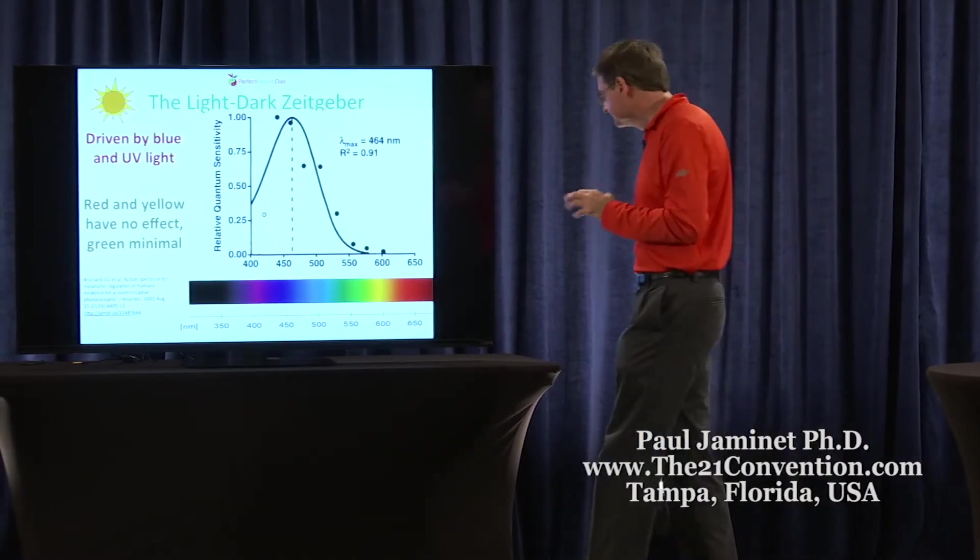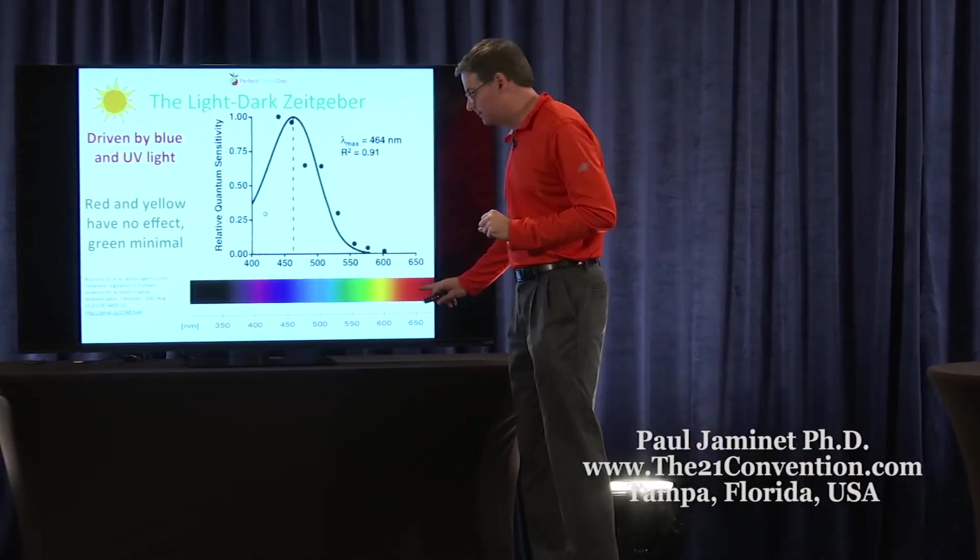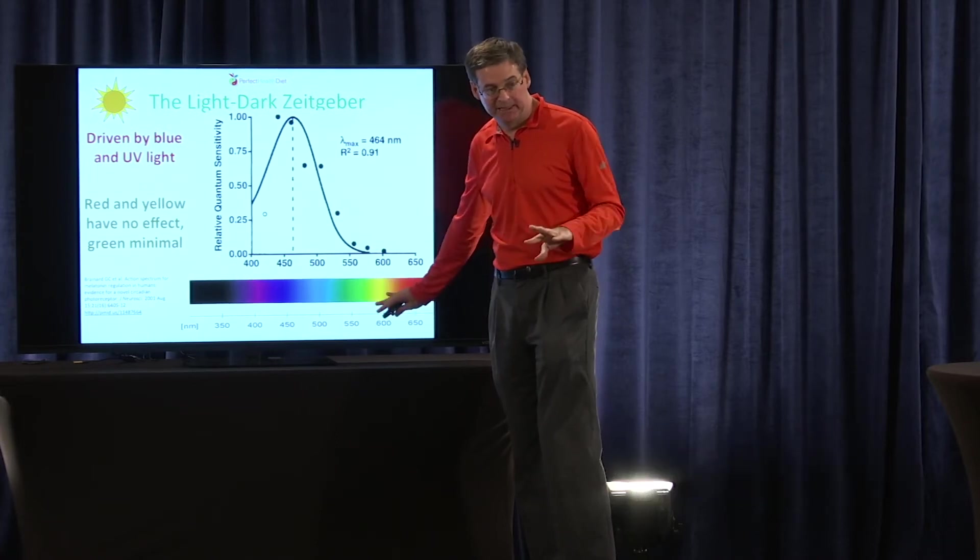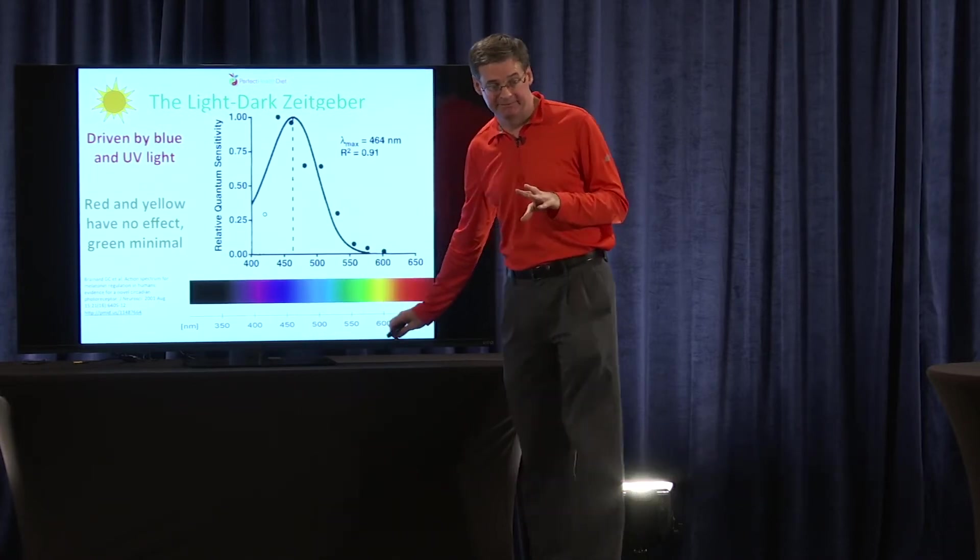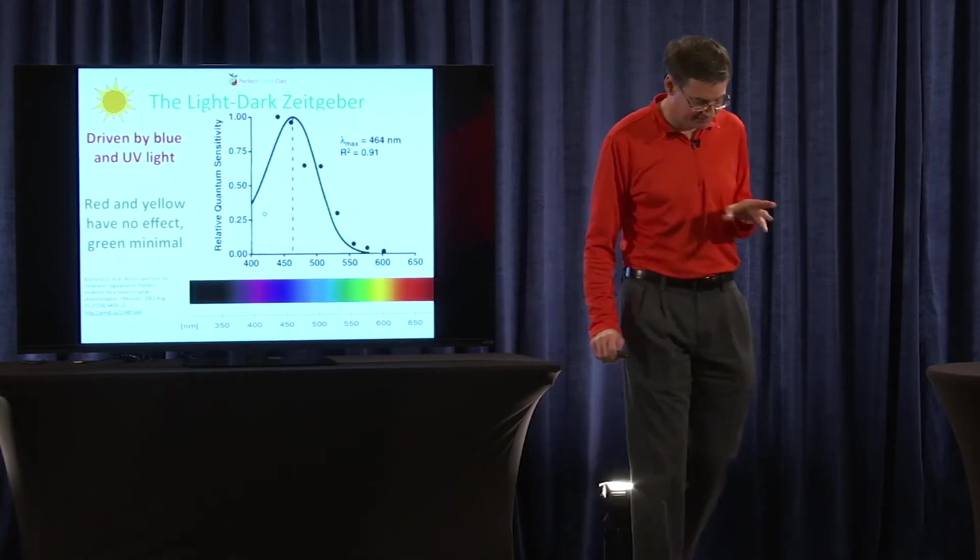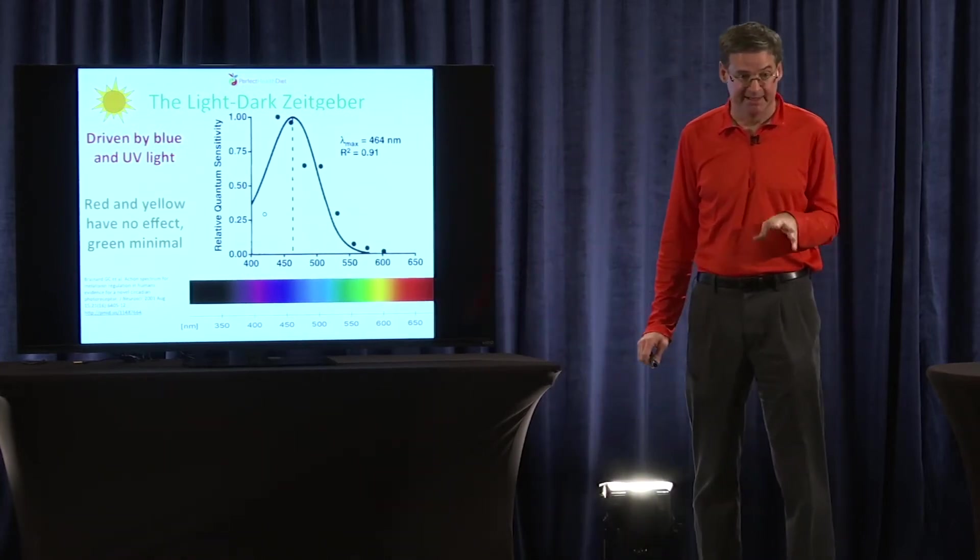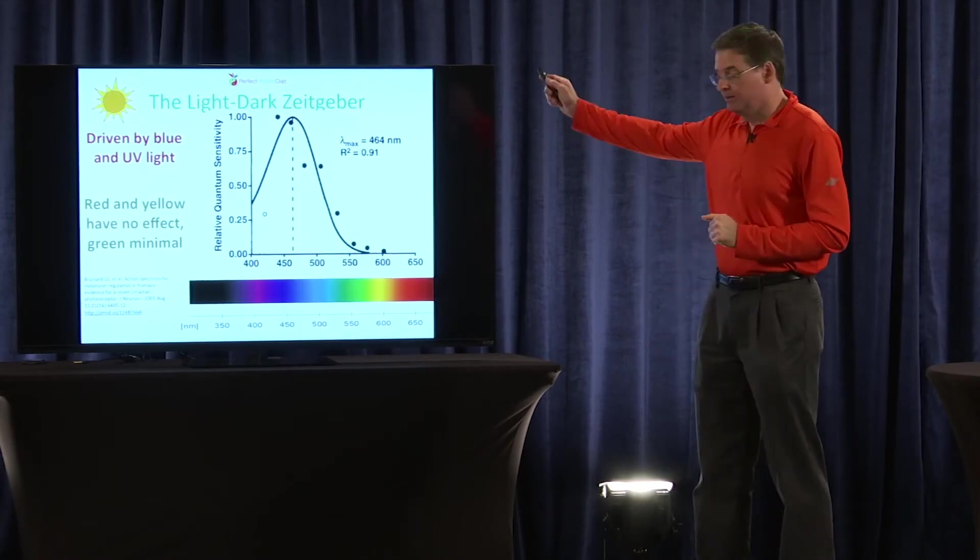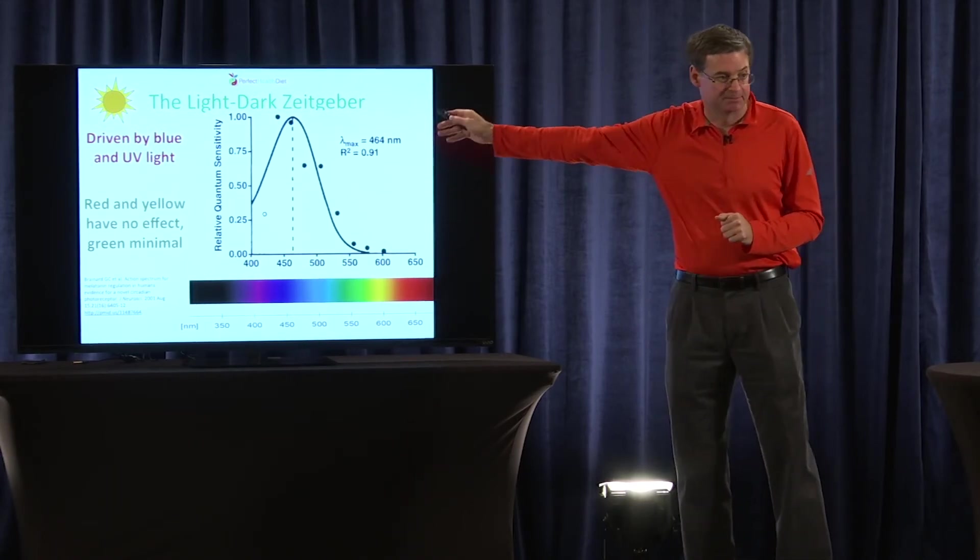So what does that mean? In the nighttime, you can use red, orange, yellow light with no problem. It won't have any effect on your circadian rhythms. It won't tell your brain that it's daytime. But in the daytime, you really need all this blue light.